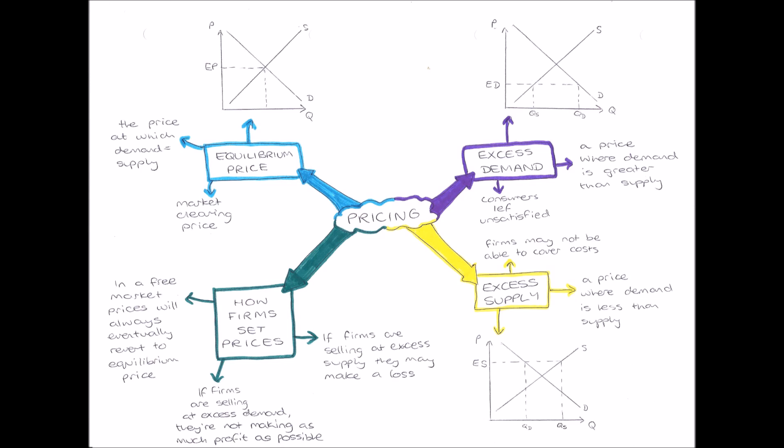If we look to the top left where we have equilibrium price — equilibrium price is the price where demand of a good equals its supply, that's the reason we call it equilibrium. We can show this on a demand and supply diagram where the demand curve and the supply curve cross each other, because at this point the quantity being demanded is the same as the quantity being supplied.